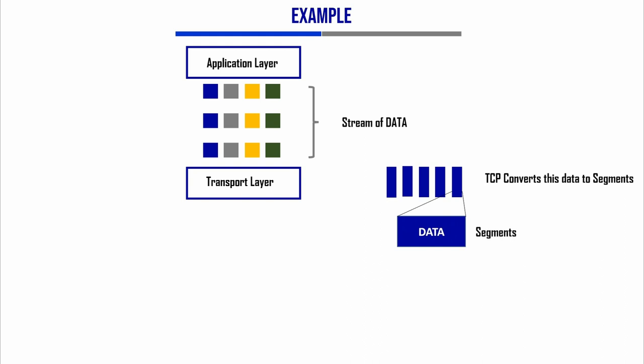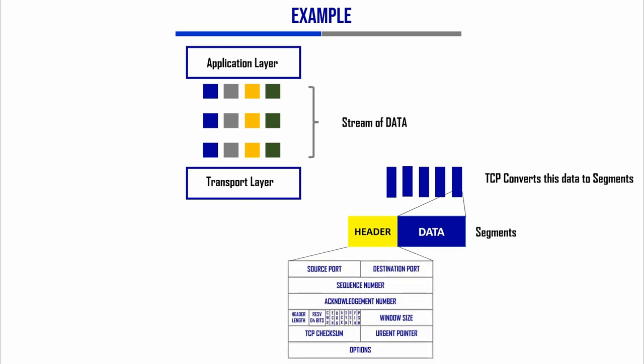The data coming from the application layer is broken down into segments. In the transport layer, each segment will have a TCP header attached to it. This TCP header has fields, and those fields have different functionalities. Based on that, the entire functionality of TCP is built. The TCP header also ensures that packets are sent to the correct services and in the correct order to ensure reliable data transfer.